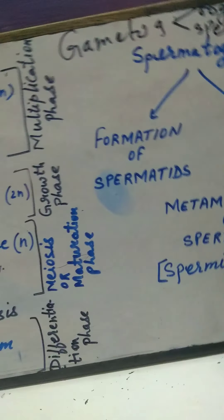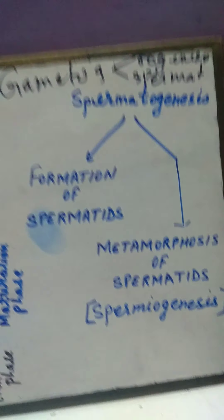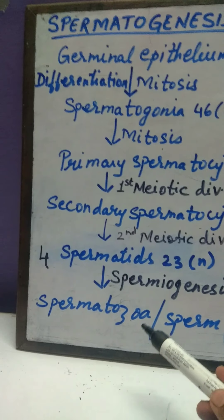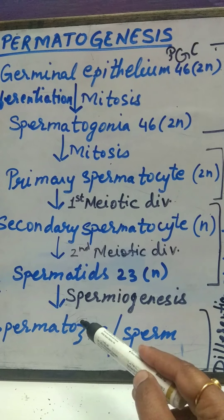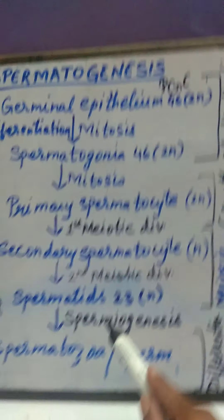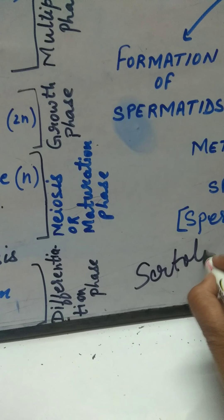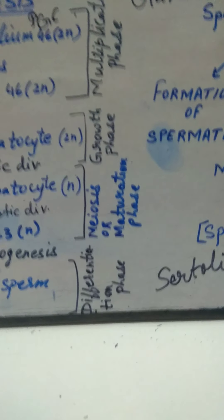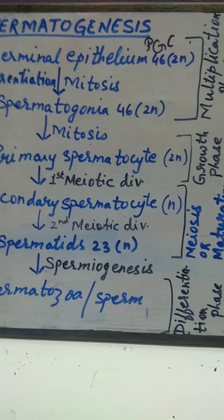Next is metamorphosis of spermatids, also called spermiogenesis. It is the conversion of spermatids into spermatozoa, and it takes place in the cytoplasm of Sertoli cells. There is no cell division here — only the weight of the gamete reduces, and development of structures for motility and penetration takes place.